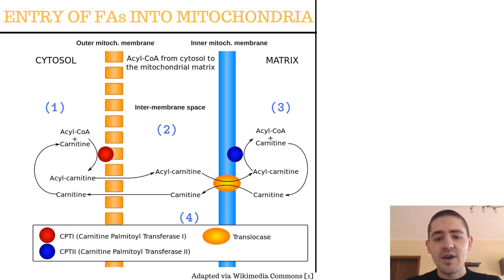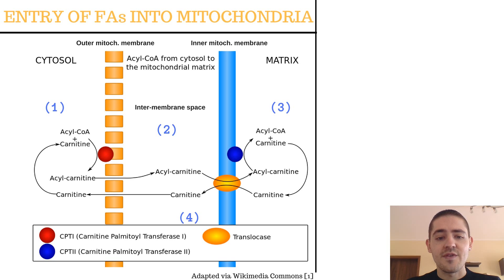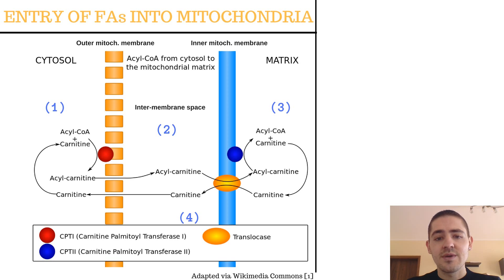Fatty acids that have 14 or more carbons — these are most dietary fats and also the fats released from the adipose tissue — require help and they undergo the enzymatic reactions of the carnitine shuttle.